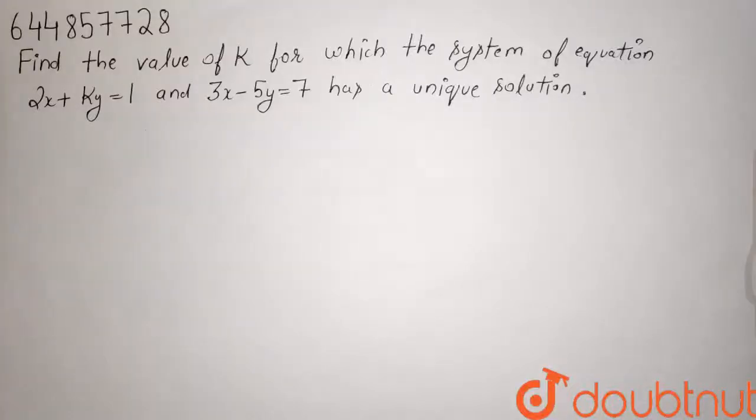Question is: find the value of k for which the system of equations 2x + ky = 1 and 3x - 5y = 7 has a unique solution.